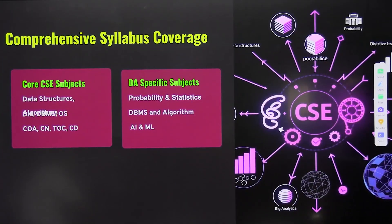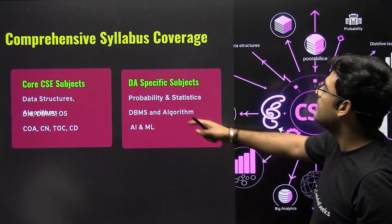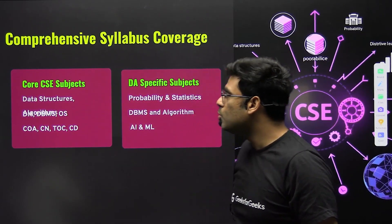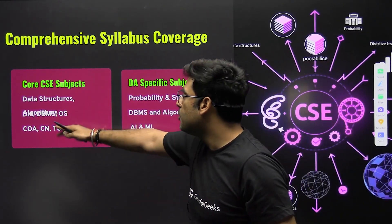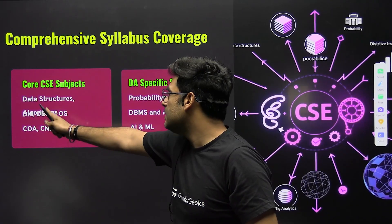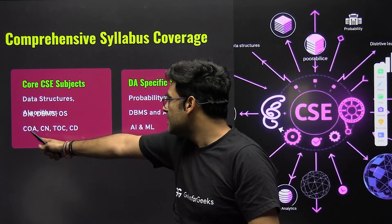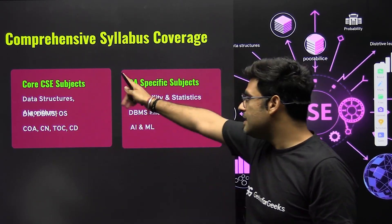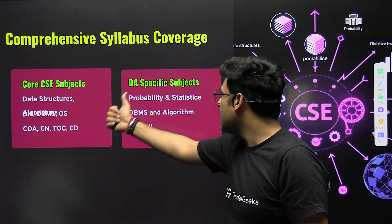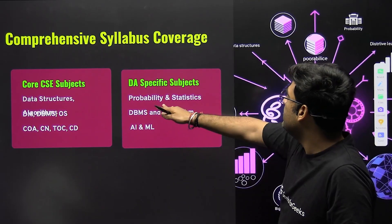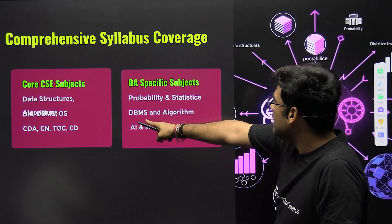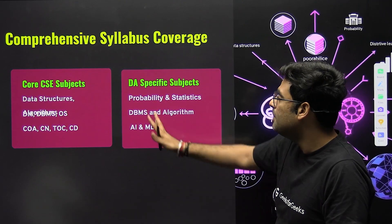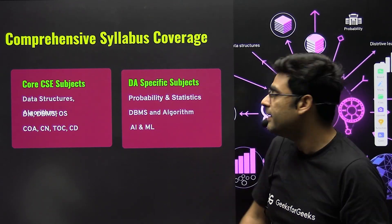Next, a comprehensive syllabus coverage. For core CSC, the most important subjects are: data structures, DBMS, algorithms, operating systems, and theory of computation. For DA, the important subjects are probability and statistics, DBMS, algorithms, and AI/ML — these subjects hold very good weightage.